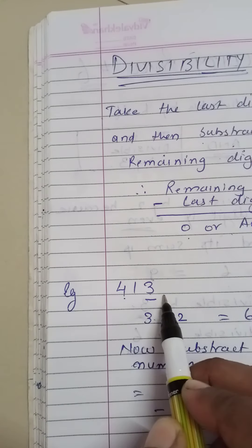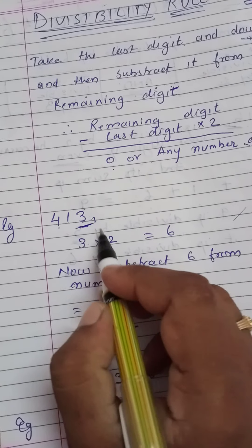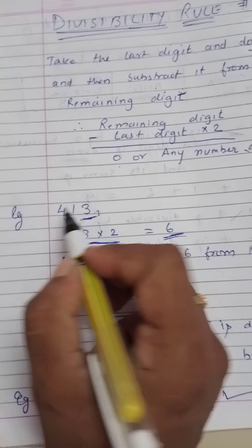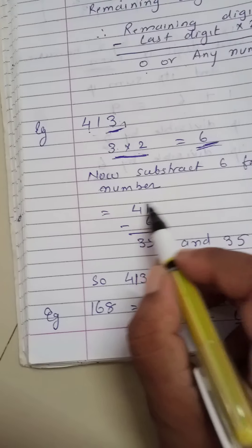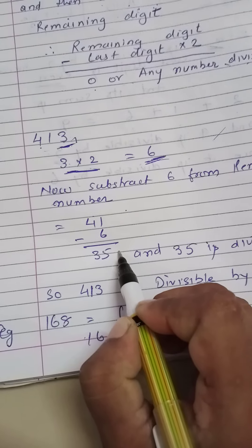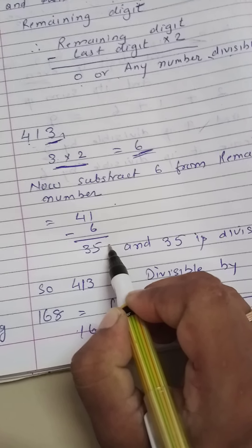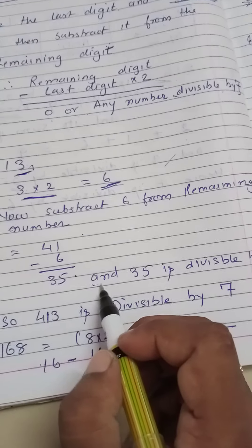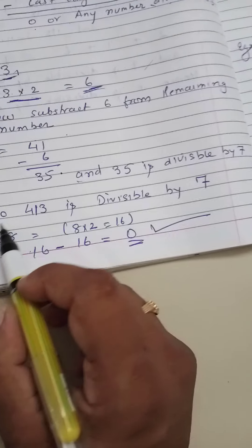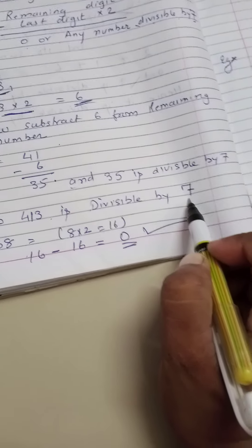Let's understand this with the example of 413. The last digit is 3, so we double it to get 6. We subtract this 6 from the remaining number, which is 41: 41 minus 6 equals 35. Since 35 is in the 7 times table (7 × 5 = 35), we can say that 413 is certainly divisible by 7.